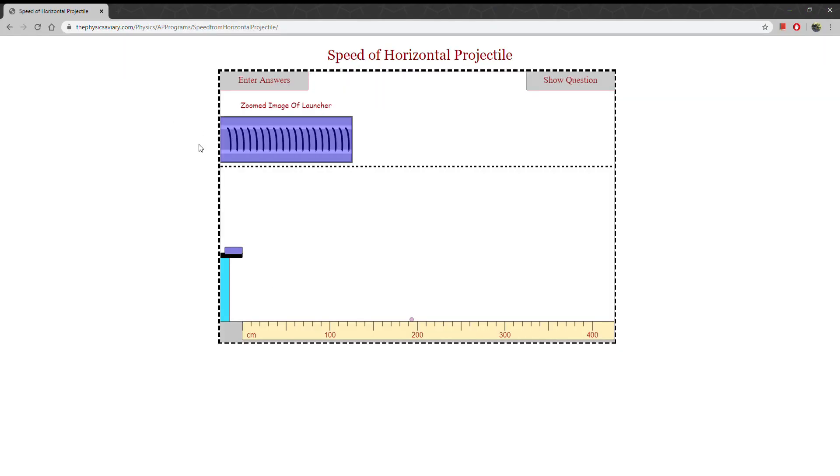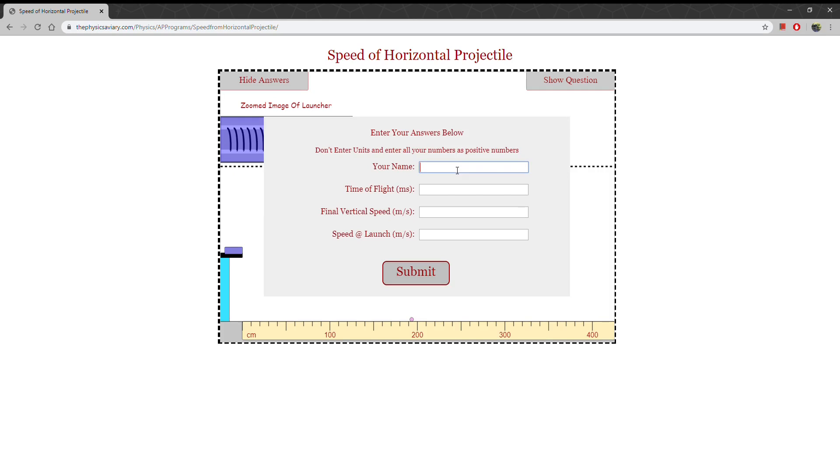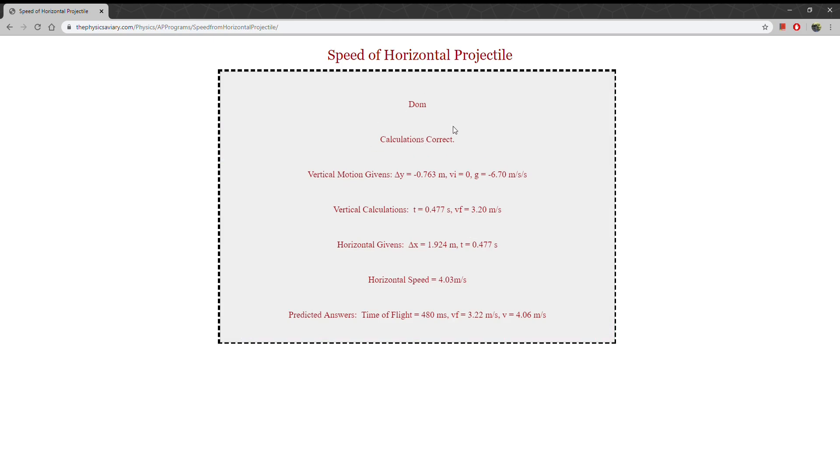Okay, so here we are at the website. And we're going to go ahead and enter our answers. So enter your name. The time of flight, we said, was 480 milliseconds. Our final vertical speed was 3.22 meters per second. And our speed at launch was 4.06 meters per second. And if we submit it, we see that our calculations are correct. So hopefully you get the correct calculations in your problem, too.